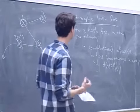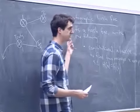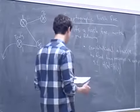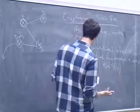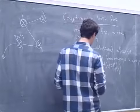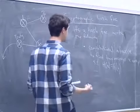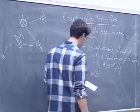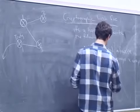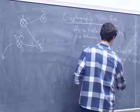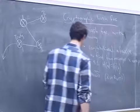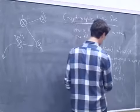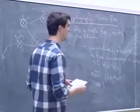These functions are designed by mathematicians using very deep math. In practice, we use a couple of well-known hash functions. One common one is MD5 — a widely used cryptographic hash function due to Ron Rivest, the same 'R' in RSA. Another common one is SHA-1. You may have seen these acronyms before.